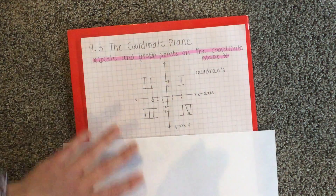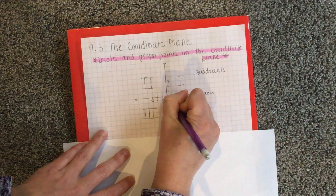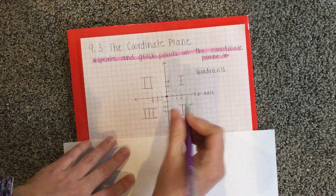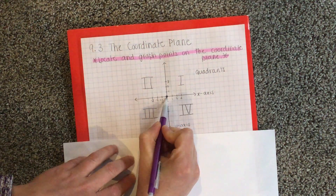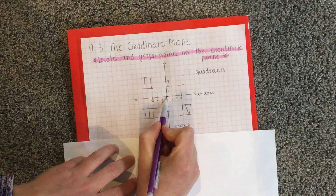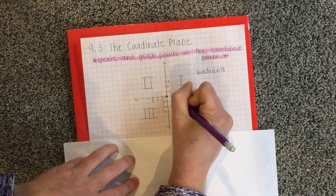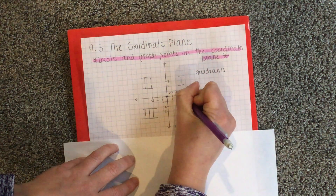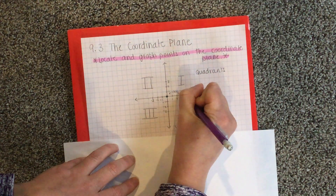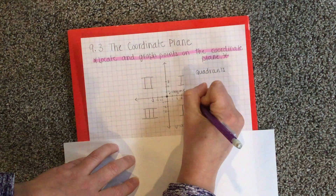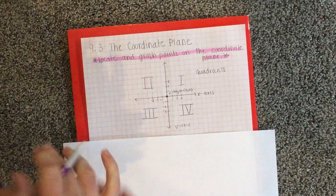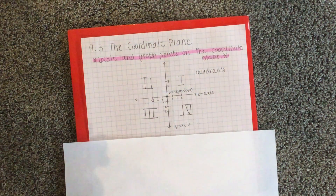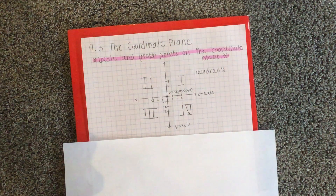The last thing you need to know is this special ordered pair right here. This ordered pair where the x and y-axis meet is called the origin. It's special because it's the beginning point of the x and y-axis — it's the beginning of where you graph.